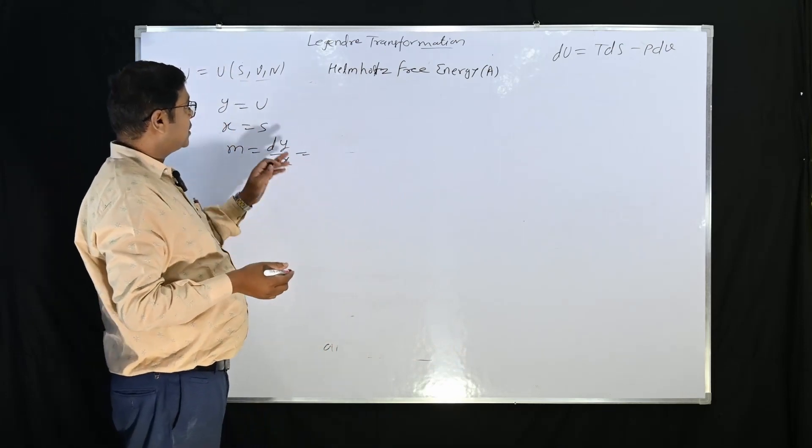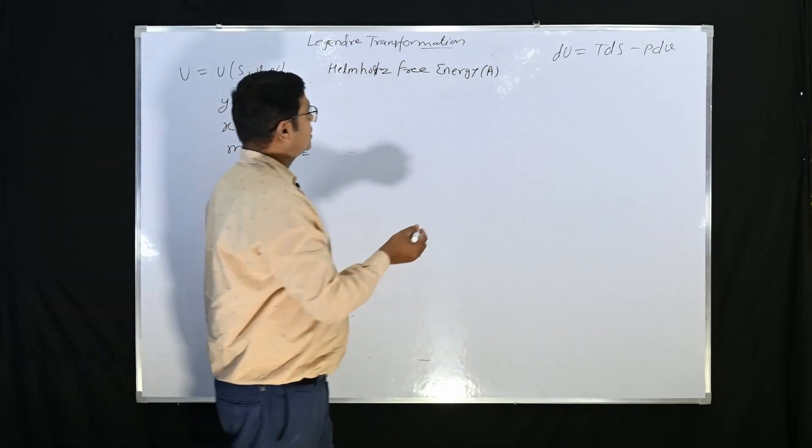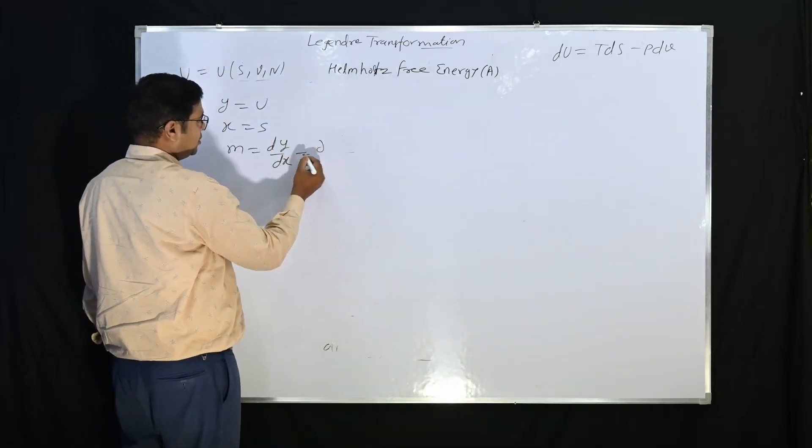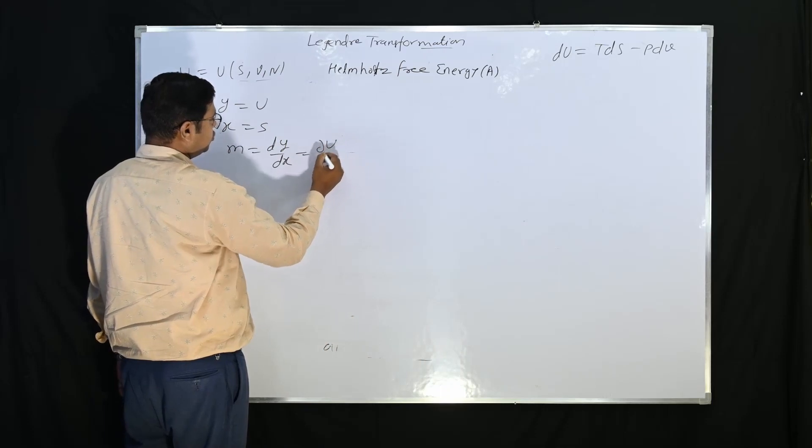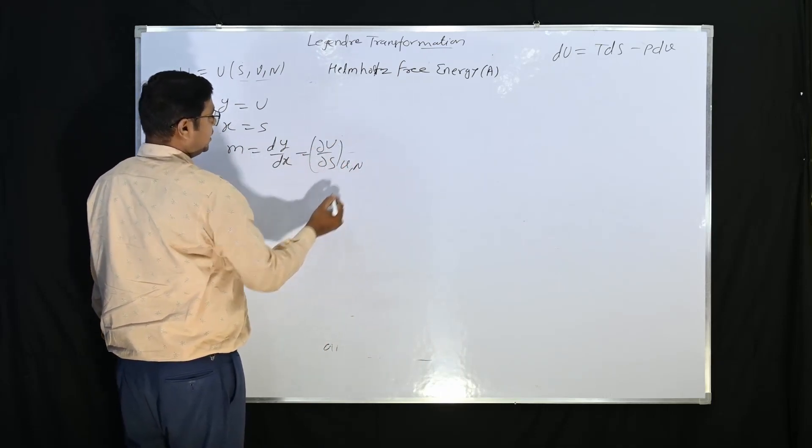Now, what we want, our property variable is entropy which we would like to replace. So here, it comes ∂U/∂S where volume and N are constant.